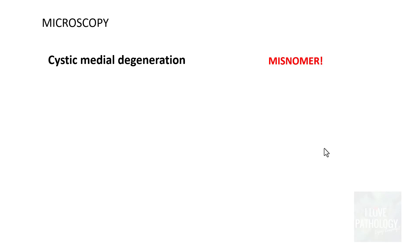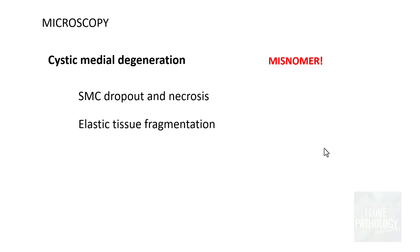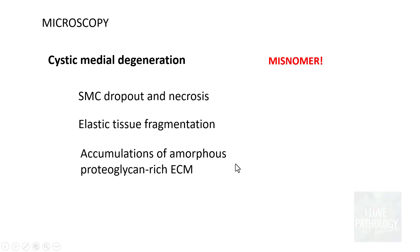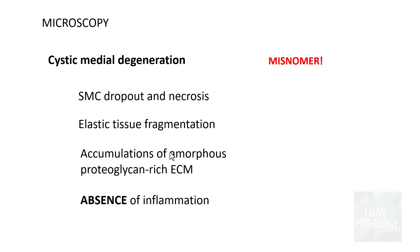Microscopically, the characteristic feature is cystic medial degeneration. Though called cystic medial degeneration, this is a misnomer because it is not truly cystic nor actual degeneration. Basically, it is smooth muscle cell dropout and necrosis, with fragmentation of elastic tissue and accumulation of amorphous proteoglycan-rich extracellular matrix. This softened area looks cystic in nature, which is why it was called cystic medial degeneration. Note that there is no inflammation in this condition.